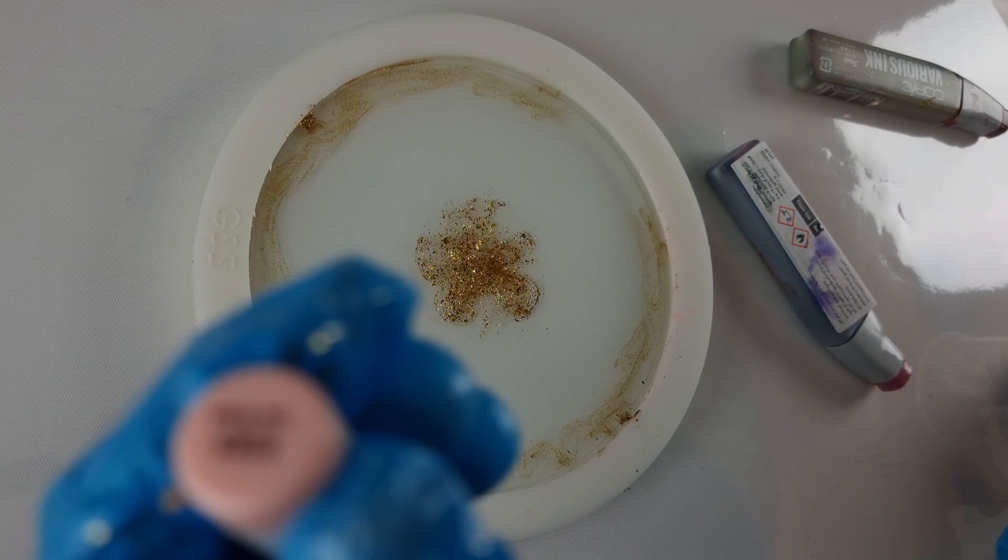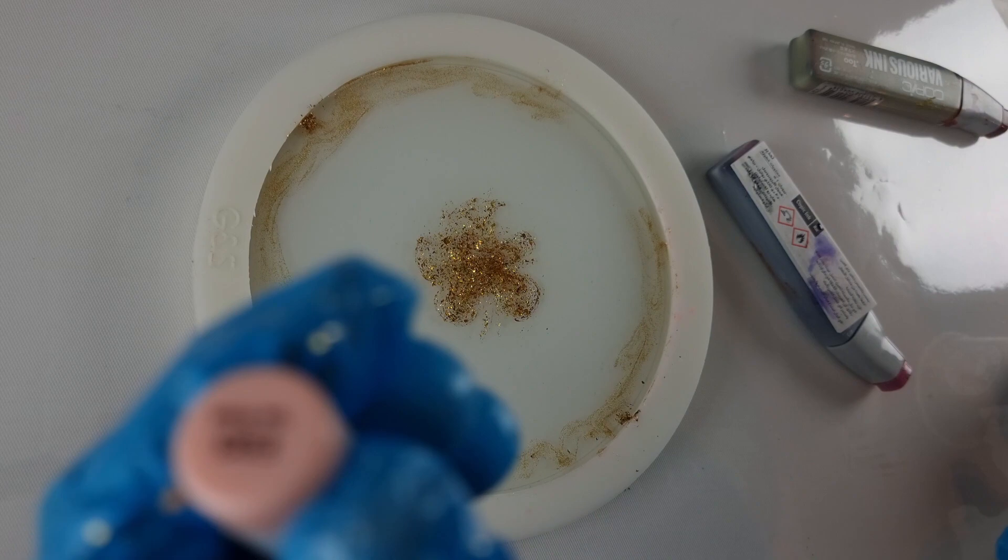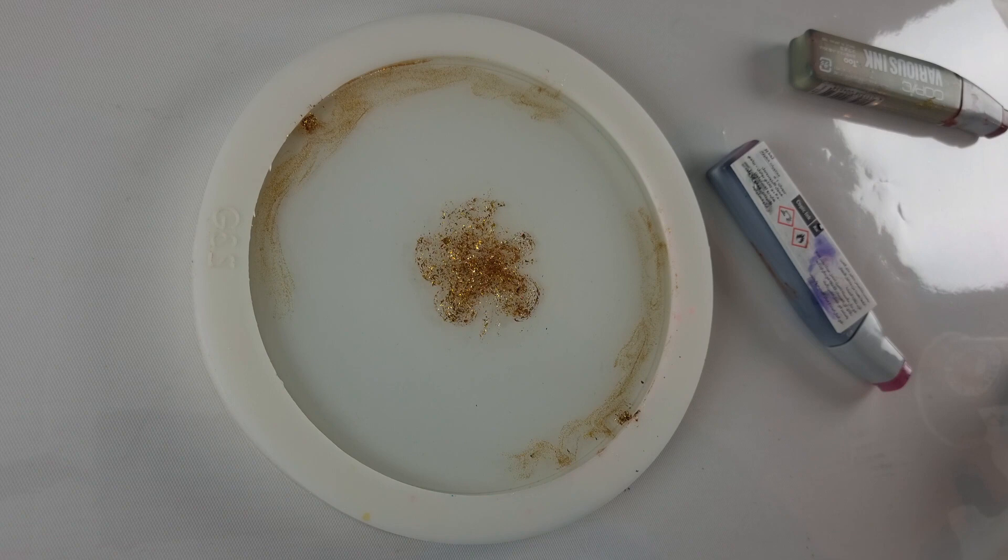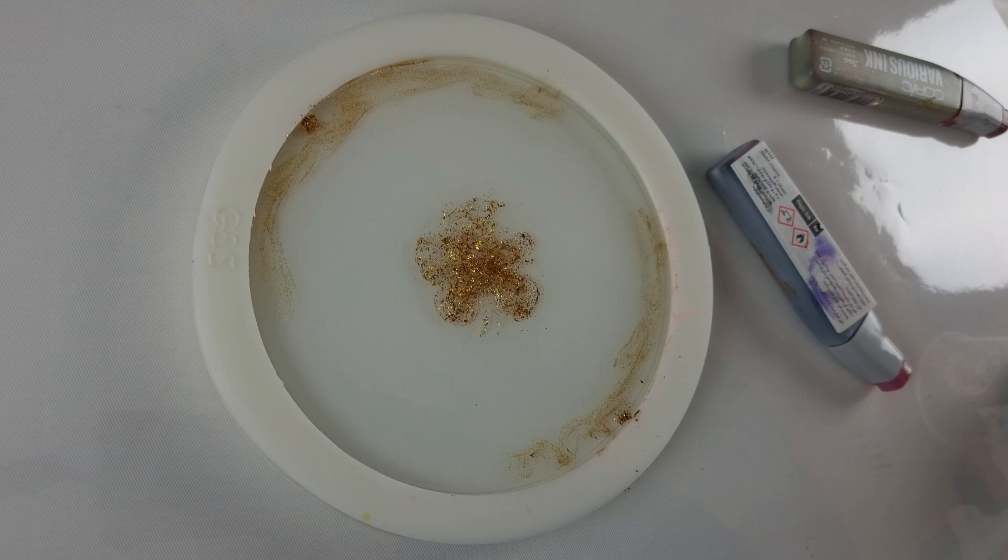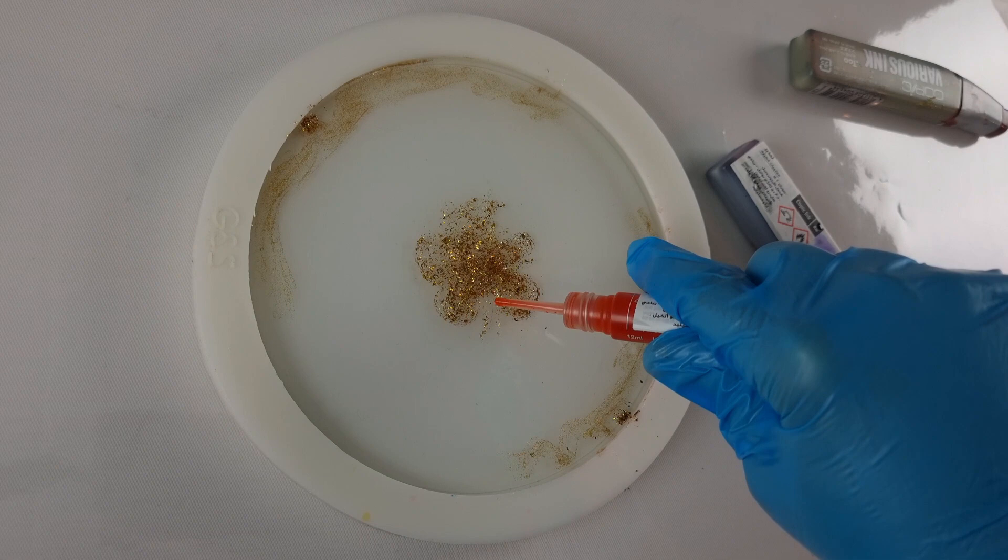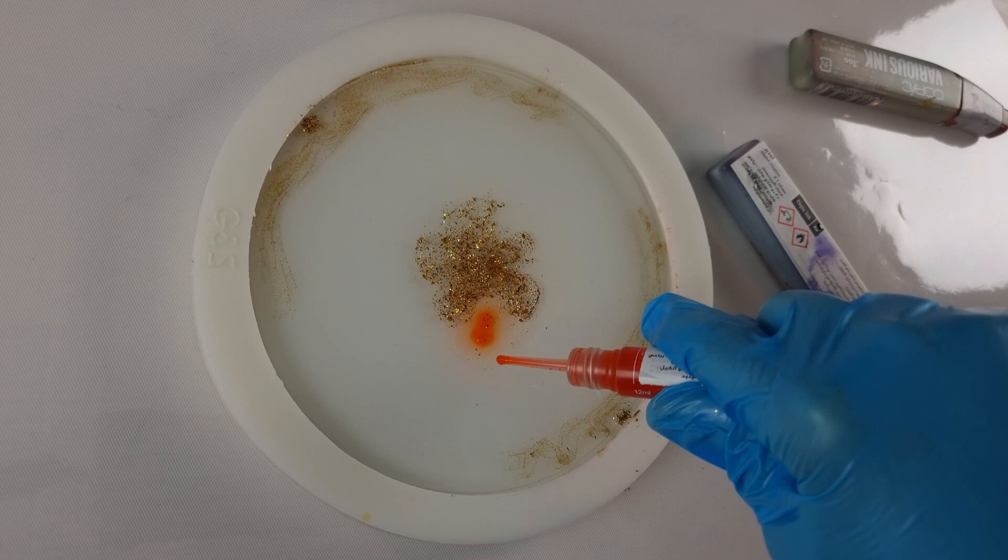This time I'm using different alcohol inks. They are Copic, I think it's called Copic inks. And this was this color which I'm using right now called Tea Rose. It's a very pretty color. It's kind of a peach color, but oh my goodness, it was so pretty.